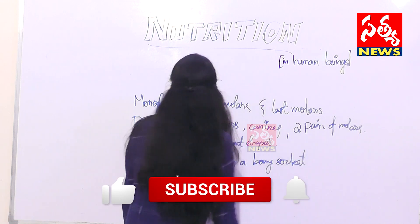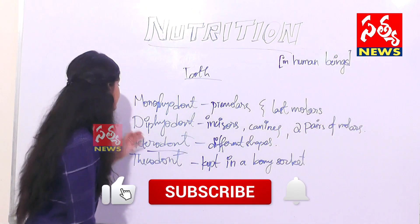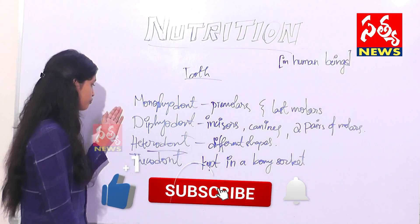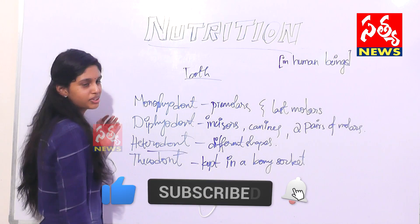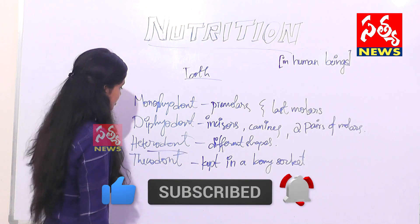That's why our teeth have these many names: monophyodont, diphyodont, heterodont, and thecodont.